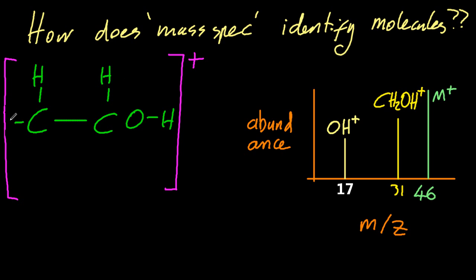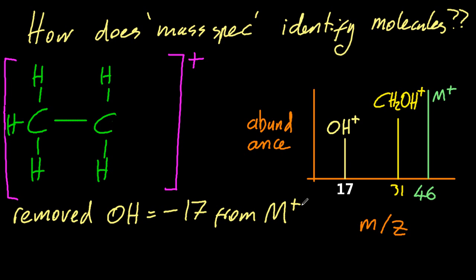Furthermore, I could do another cut in the same place and cut off the OH, leaving a positive ethyl ion. So 17 is missing now from the 46 original, and that gives me a line at 29.